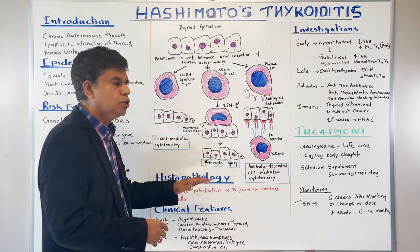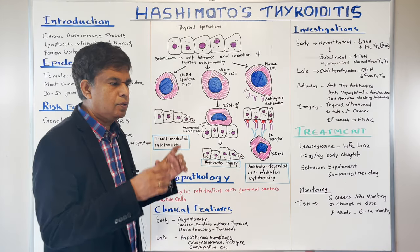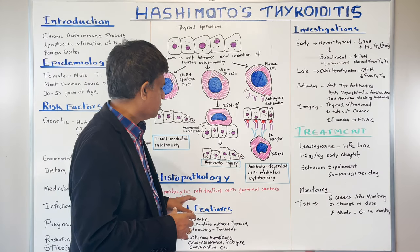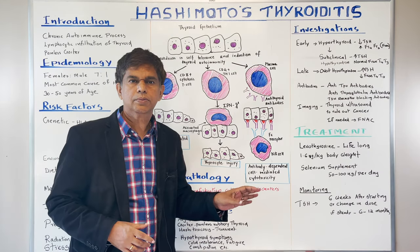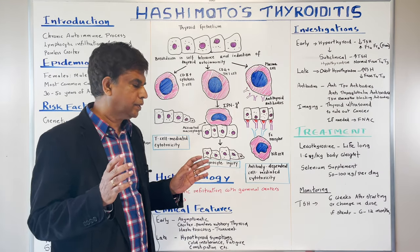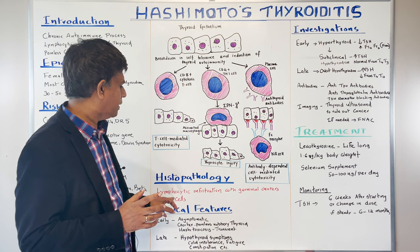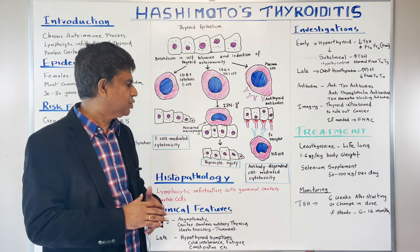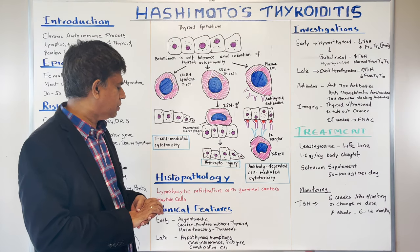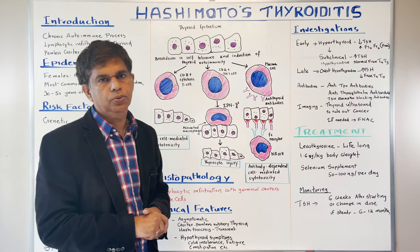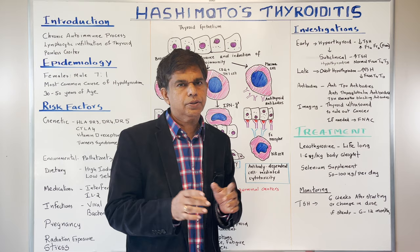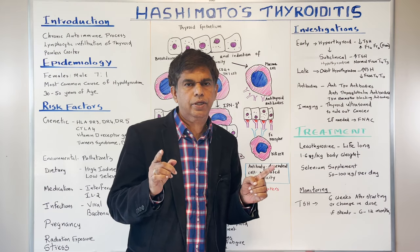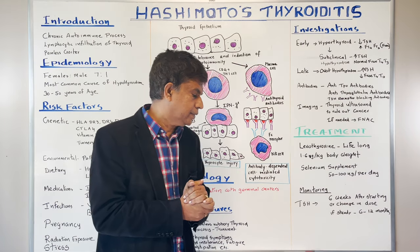Now let's look at the histopathology — what you see under the microscope. The pathognomonic finding is lymphocytic infiltration with germinal centers and Hürthle cells. This is good to know, as examinations may ask about this.